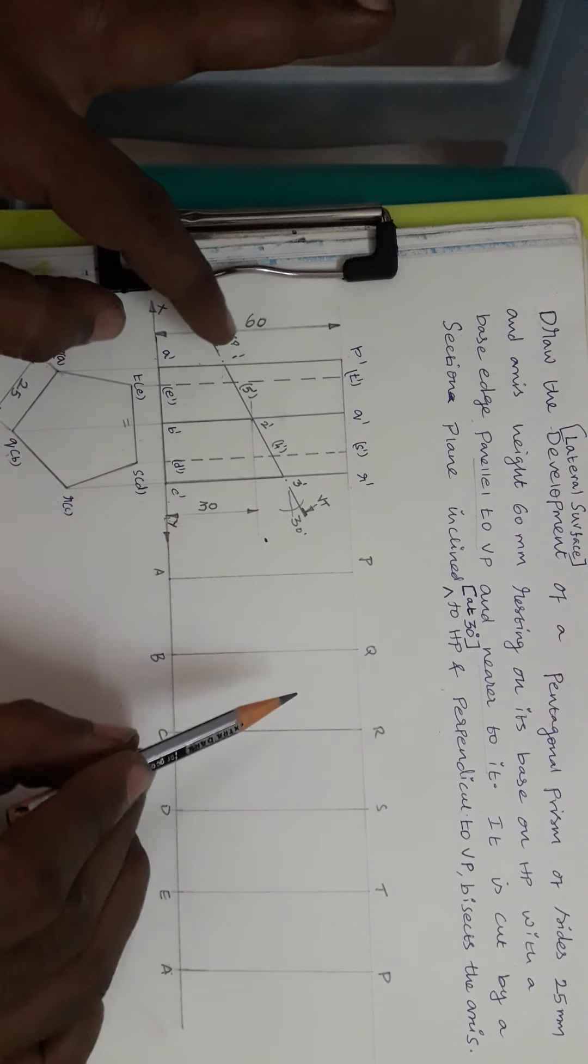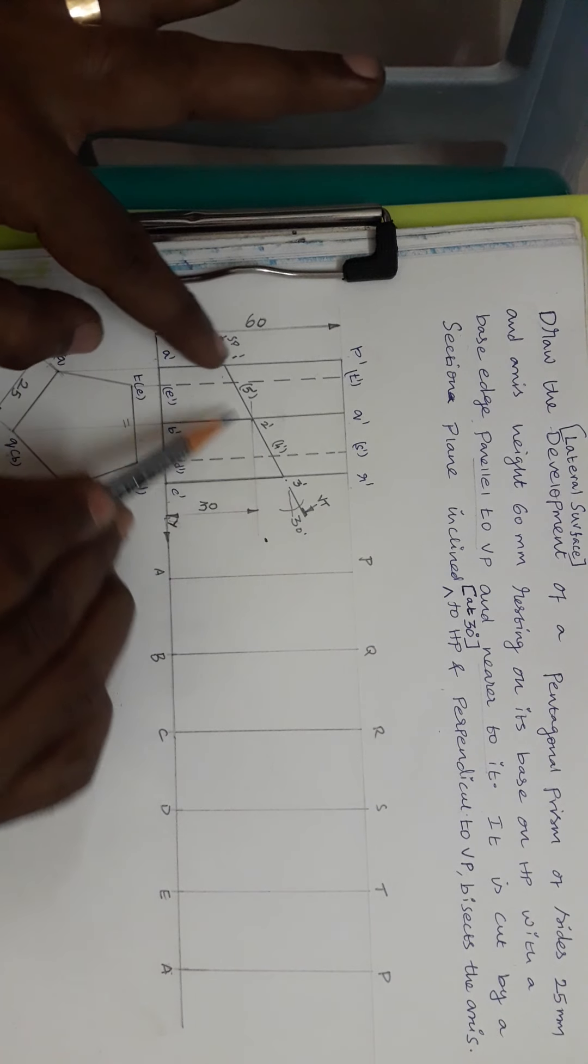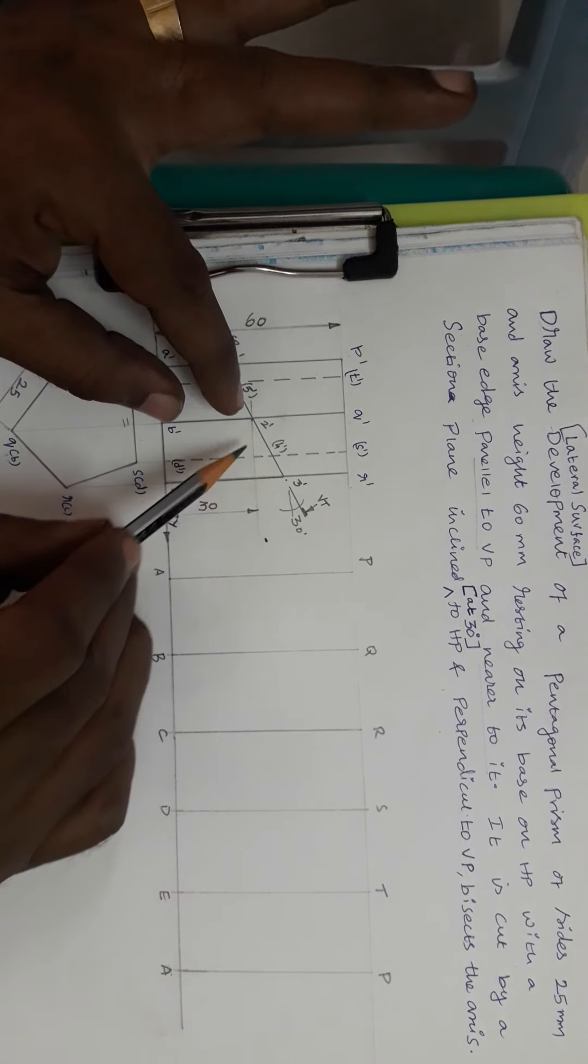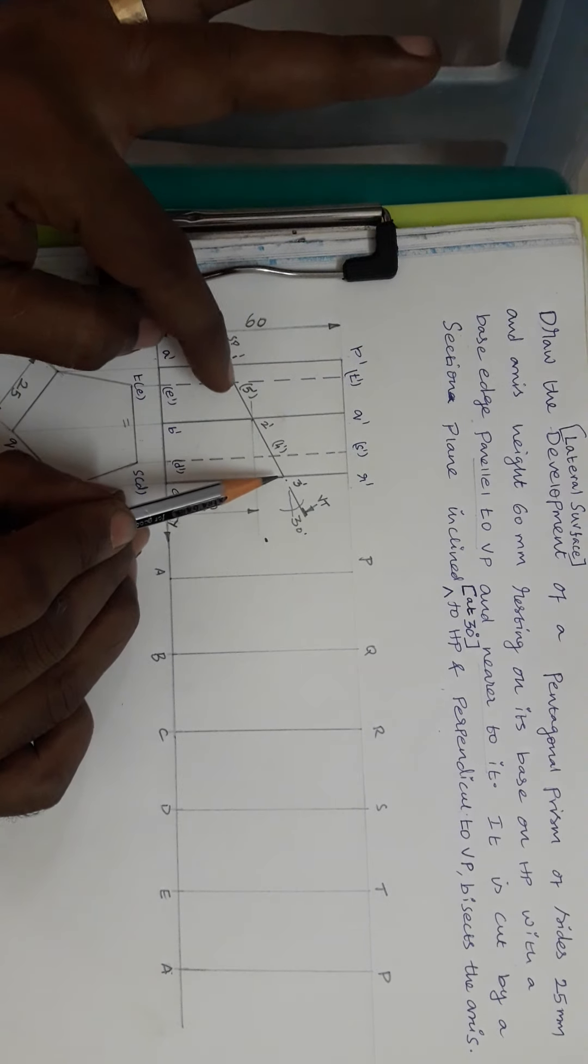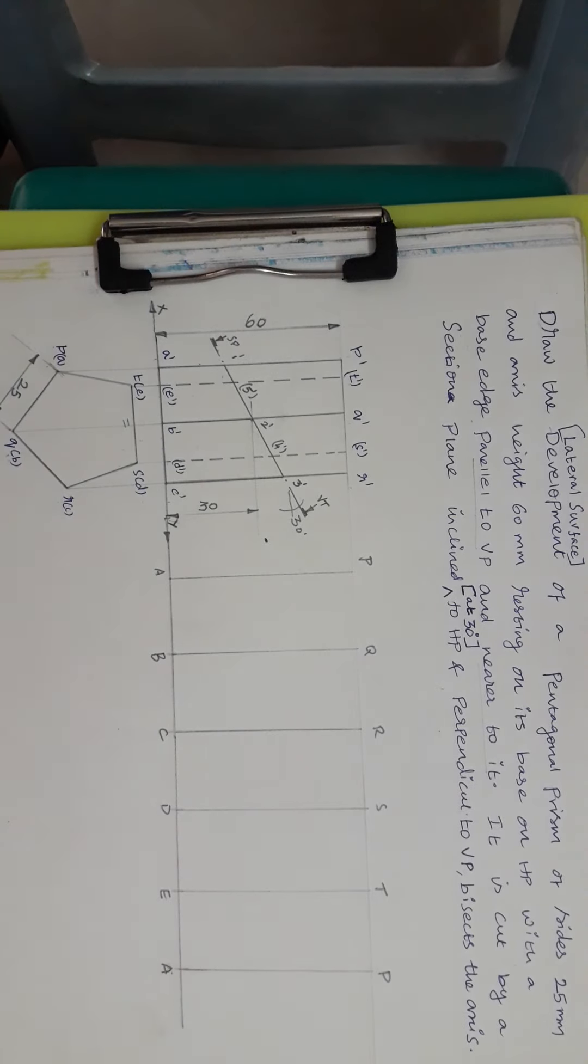Now I have drawn the development for the full lateral surface development for the full prism. But our question is not like this. It has a cutting plane. Our structure is only this bottom off, not this top off.